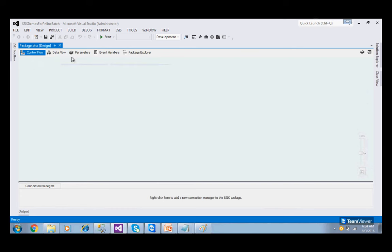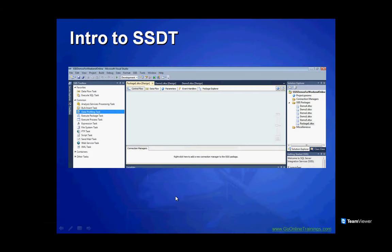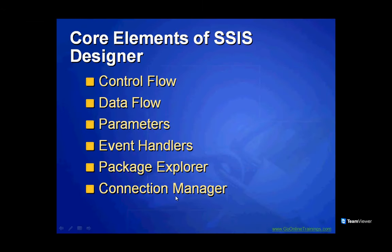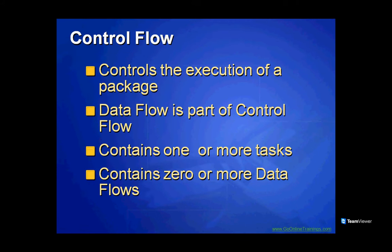Let us understand what Control Flow and Data Flow are. Control Flow is the execution of the package. It contains one or more tasks and zero or more Data Flows. Control Flow will have tasks, containers, and precedence constraints. Precedence constraints define which task runs first and which runs later. Data Flow is part of the Control Flow, contains sources, destinations, and transformations, and performs ETL operations — but it is not mandatory.